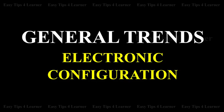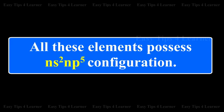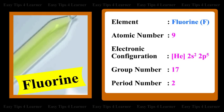General Trends: Electronic Configuration. All these elements possess NS2 NP5 configuration. For the element Fluorine, the atomic number is 9. The electronic configuration is 1S2, 2S2, 2P5. The group number is 17 and the period number is 2.